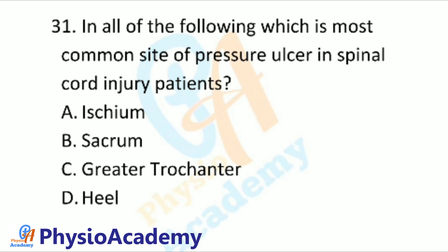Question number 31: In all of the following, which is the most common site of pressure ulcer in spinal cord injury patients? Option A: Ischium. Option B: Sacrum. Option C: Greater trochanter. Option D: Heel.